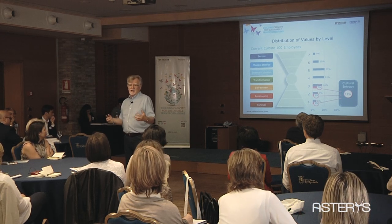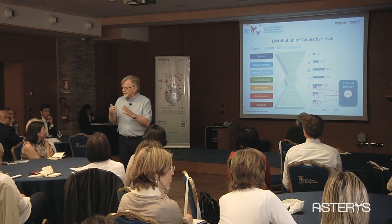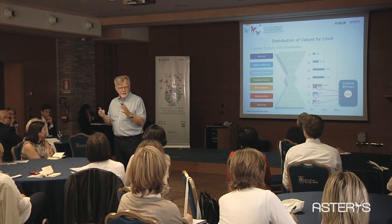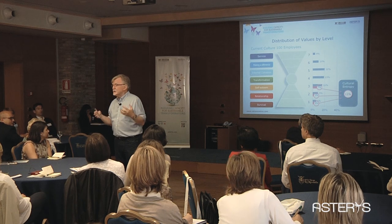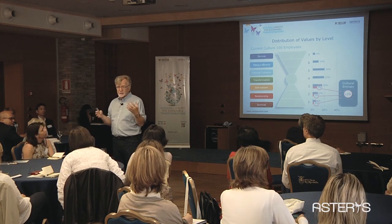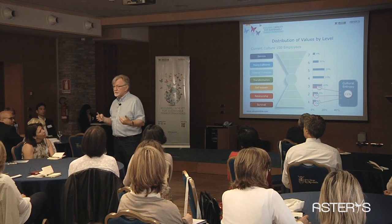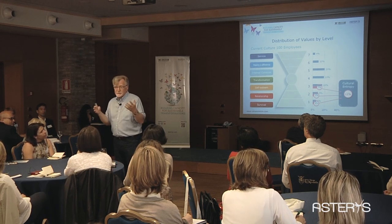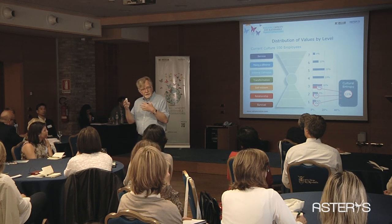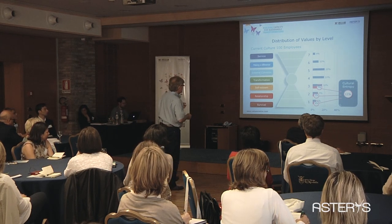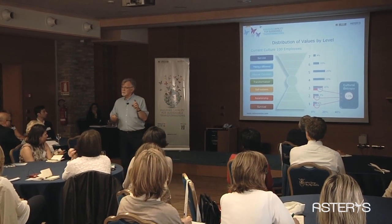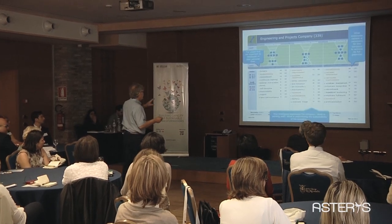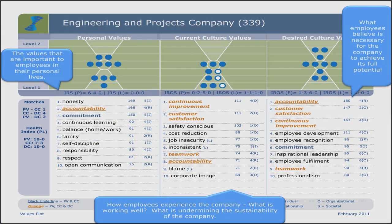We've done thousands of these assessments, so cultural entropy is now finely tuned. You can also measure the personal entropy of leaders using a similar system. Here's what the result looks like: on the left you've got the top 10 personal values by level — this is 339 people in an engineering company, 169 voted for honesty. In the second column you've got the current culture with white dots for potentially limiting values like blame, inconsistency, job insecurity. On the right is the desired culture.